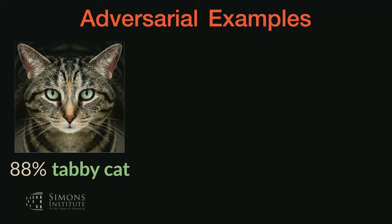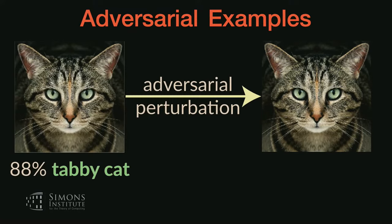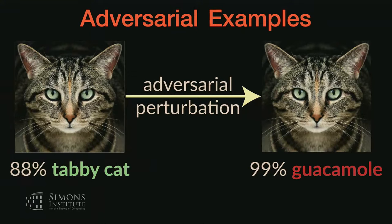You can take a classifier — in this case an image classifier — that gets an image right with 80% confidence as 'tabby cat', and you can introduce adversarial perturbations that make the same neural network get a new image wrong. The image looks essentially indistinguishable to humans, but the neural network now labels it as 'guacamole' with 99% confidence. This was fun five years ago, but it's old news now. We've known about it for 10 years, and lots of people have written it off as not important in practical settings.